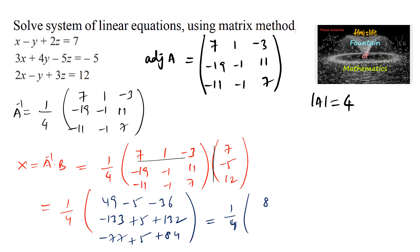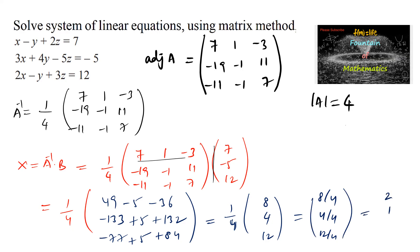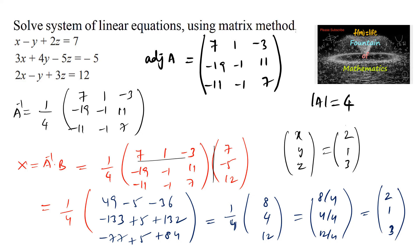Simplifying: first row gives 49 minus 5 minus 36 equals 8; second row gives negative 133 plus 5 plus 132 equals 4; third row gives negative 77 plus 5 plus 84 equals 12. So X equals 1 over 4 times [8, 4, 12], which gives [2, 1, 3]. Therefore x equals 2, y equals 1, z equals 3 is the solution.